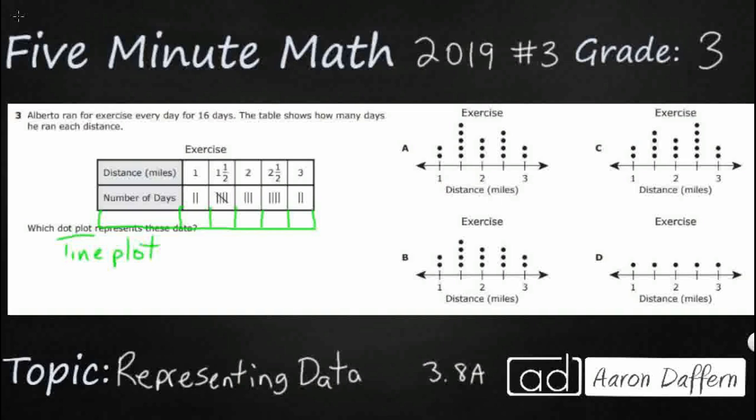So we will just say number. I'm going to put a little number sign here, a little hashtag there. So one mile he ran that two days, one and a half mile he ran that five days, and two miles he ran that three days, two and a half miles four days, and then three miles he ran two days.